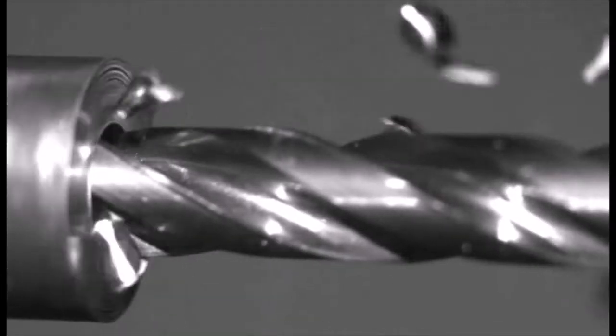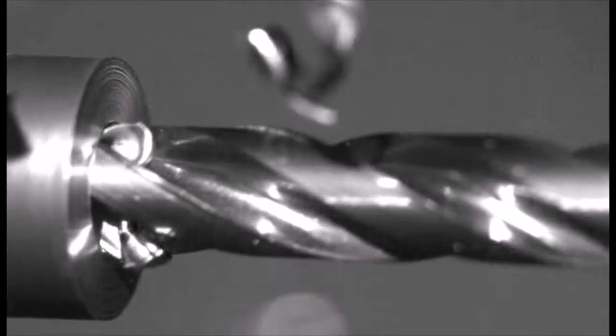The ideal shape is referred to by the terms sixes and nines describing the look of the chips. This shape ensures effective evacuation, avoiding chip packing in the flutes.